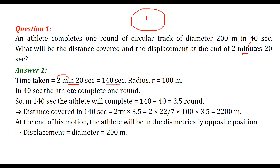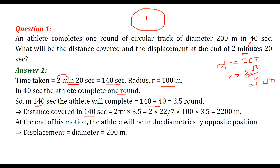Since the diameter is given as 200, the radius will be equal to 200 divided by 2, that is radius will be 100. Now in 40 seconds there is one round. In 140 seconds, how many rounds? 140 by 40, that is 3.5 rounds.